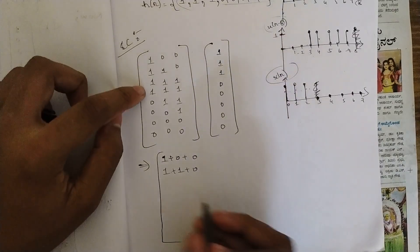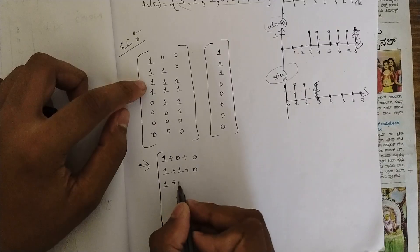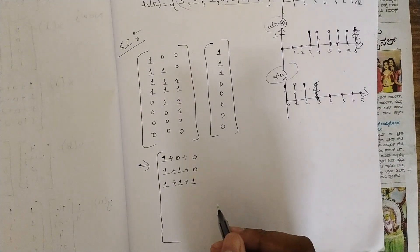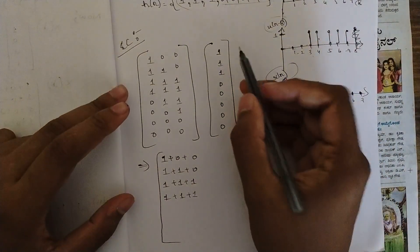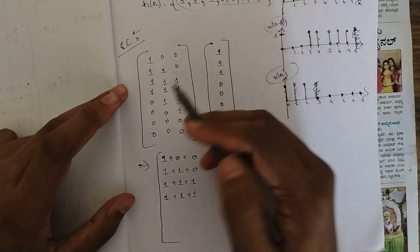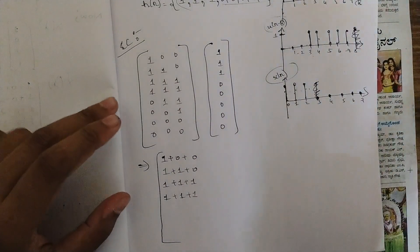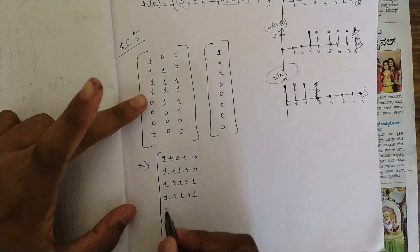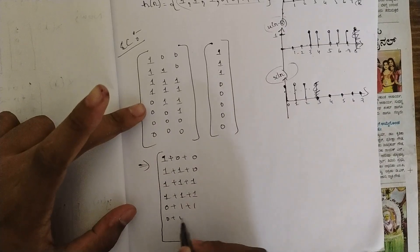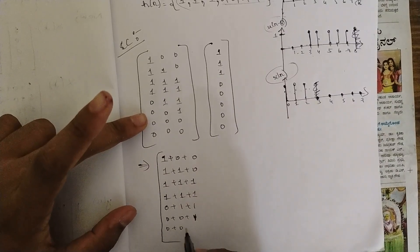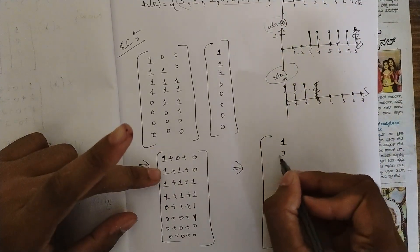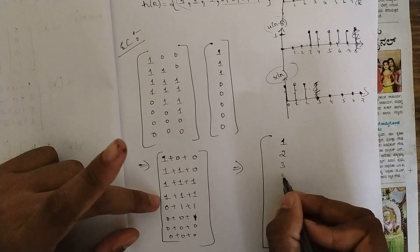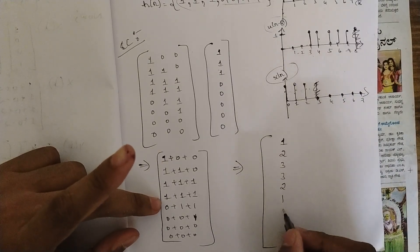Multiplying the circulant matrix of x(n) with h(n) = {1,1,1,0,0,0,0,0}: the dot products of each row give: 1, 2, 3, 3, 2, 1, 0, 0. So the final sequence is y(n) = {1, 2, 3, 3, 2, 1, 0, 0}.